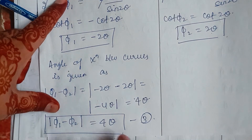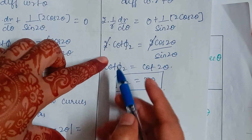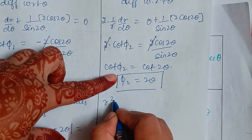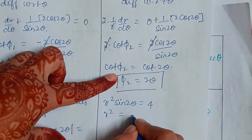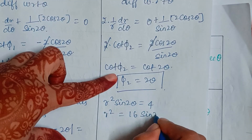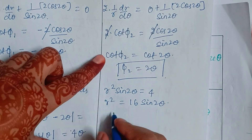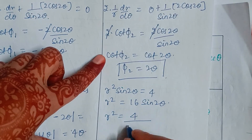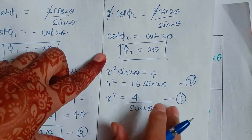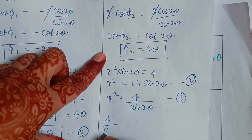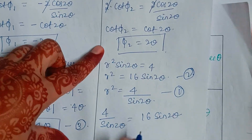From equations 1 and 2: r² sin(2θ) = 4 gives r² = 4/sin(2θ), and equation 2 gives r² = 16 sin(2θ). Equating these: 4/sin(2θ) = 16 sin(2θ), which gives sin²(2θ) = 4/16.